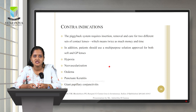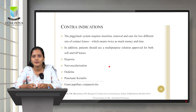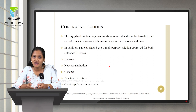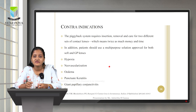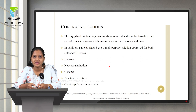Regarding contraindications, the piggyback contact lens system requires insertion, removal, and care for two different sets of contact lenses — meaning twice as much money and time. There are separate care and regimen systems for soft and RGP lenses, so using two lenses simultaneously makes it very difficult for the patient to maintain two multipurpose solutions, adding cost and time.